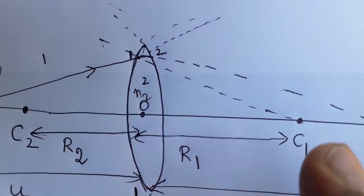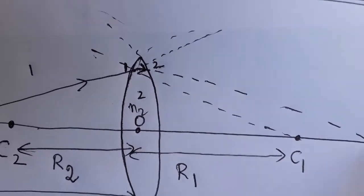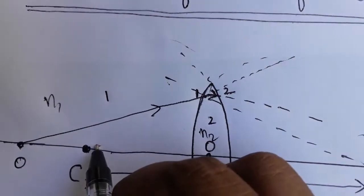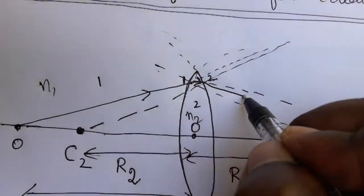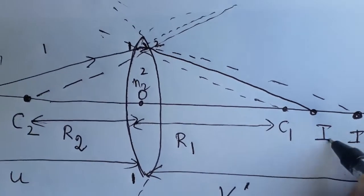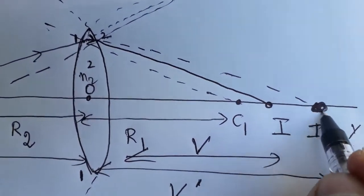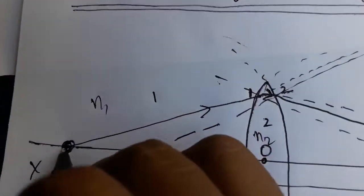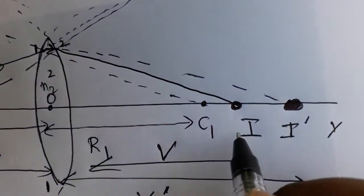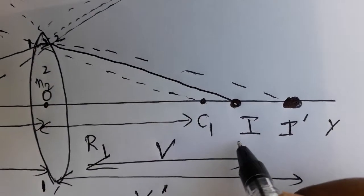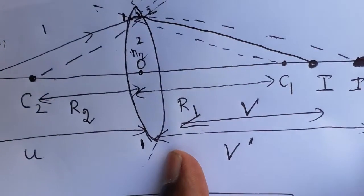Because the second surface is present, the light gets deviated again. The image formed by the first surface at v' now acts as the object for the second surface. The normal for the second surface is drawn from C2. The final image forms at point I, at distance v. So: O is the object, v' is the intermediate image, and for the second surface, v' is the object and v is the final image distance.